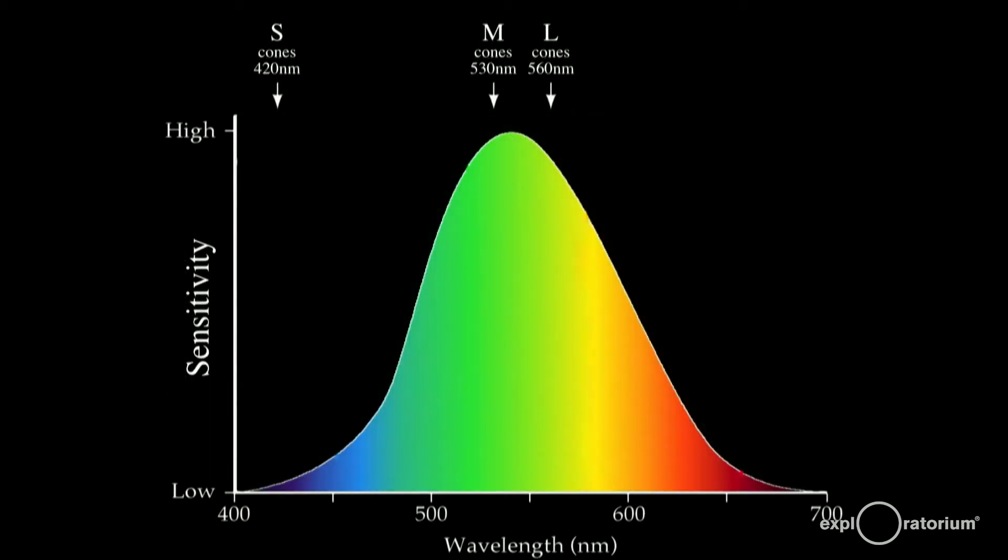If you could combine the three sensitivities of the three types of cones, this is the result. We're very sensitive in the green part of the spectrum, and much less sensitive in the red and blue-violet parts of the spectrum. We probably evolved this way because this is pretty much the amount of each color light that the sun produces. We most efficiently use what the sun makes the most of. That makes a lot of sense.